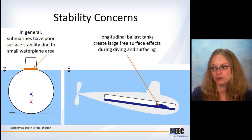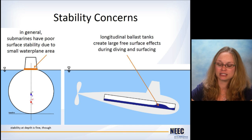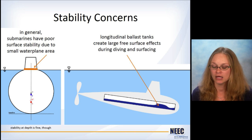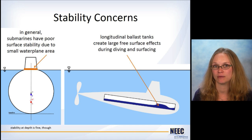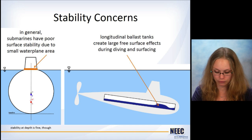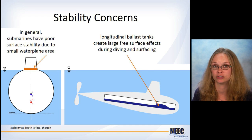So to wrap up, the two main concerns of stability with submarines are these. When they're at the surface, submarines generally have poor surface stability just because they don't have that much water plane area. So the stability at the surface has got to do with how much water plane area that your ship or your submarine has. And just due to the nature, then they just don't have that much. So that's the trade off.